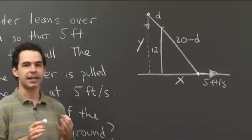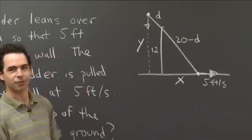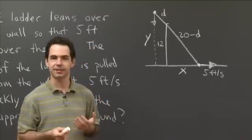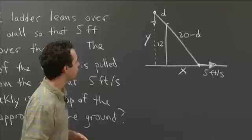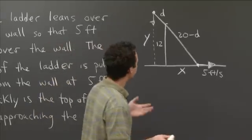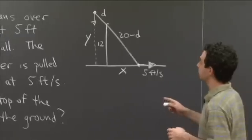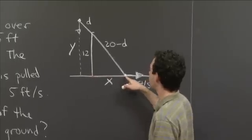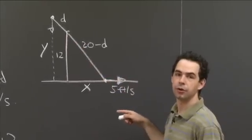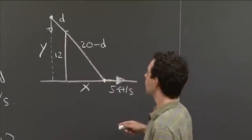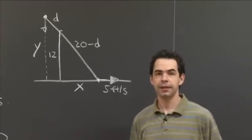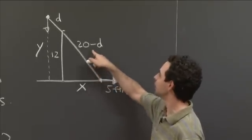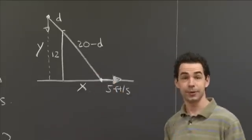Now we need to figure out the relationships between these different variables. We've got a right triangle formed by the wall, the ground, and the ladder. We can apply the Pythagorean theorem: x² + 12² = (20 − d)². That gives us a relationship between x and d. Since we know how fast x is changing, we can use related rates to figure out how fast d is changing.